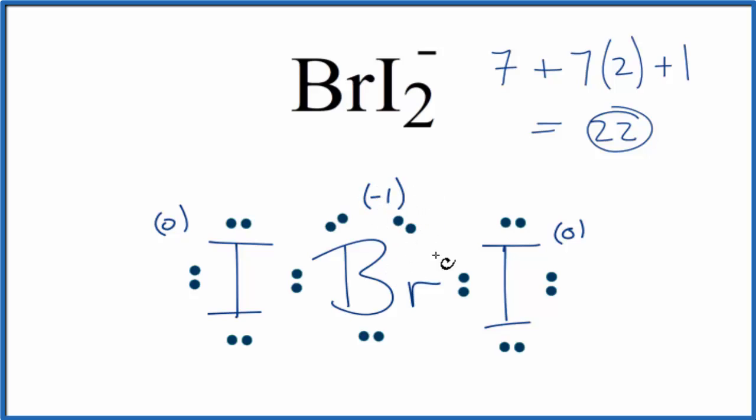So that makes me more comfortable that we put bromine in the middle. Note that the total formal charge adds up to the charge on the ion. And this is as close to 0 as it can be while still matching that ionic charge. So this is a very favorable Lewis structure for BrI2-.